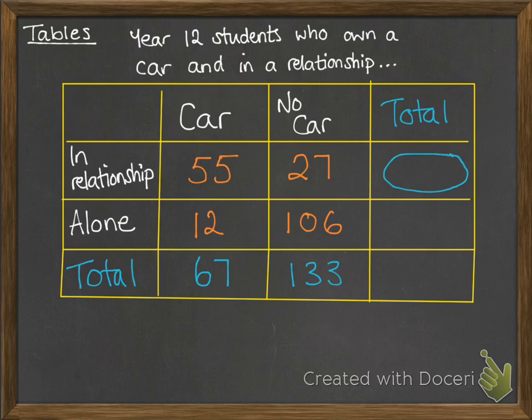Similarly for the relationship or not in a relationship, we're going to add up those totals. So we've got 55 plus 27 makes 82, and the students that are alone, not in a relationship, their total 12 and 106 makes 118.